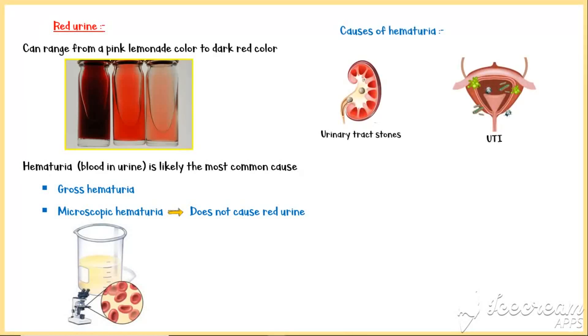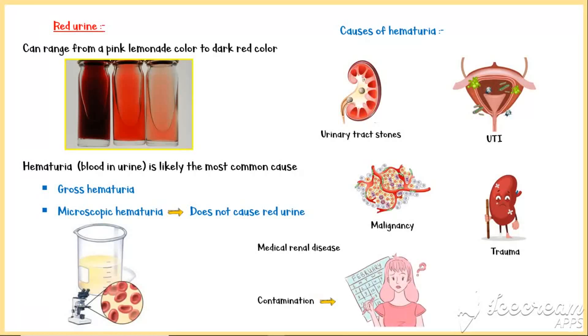Causes of gross hematuria include urinary tract stones, urinary tract infection, malignancy, kidney trauma, medical renal disease such as chronic kidney disease, and contamination, commonly with menstrual blood.